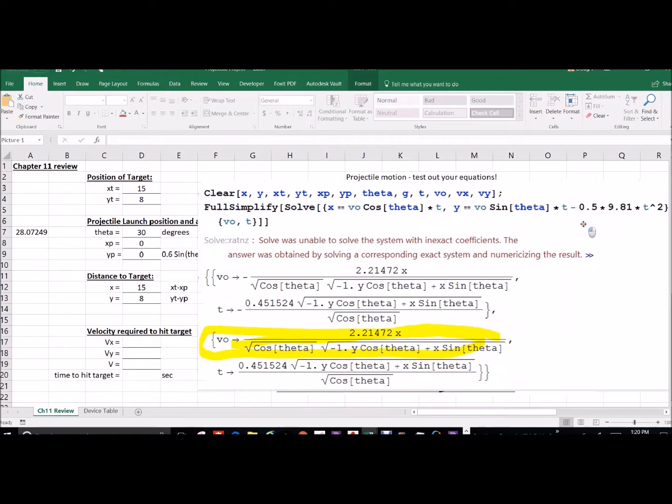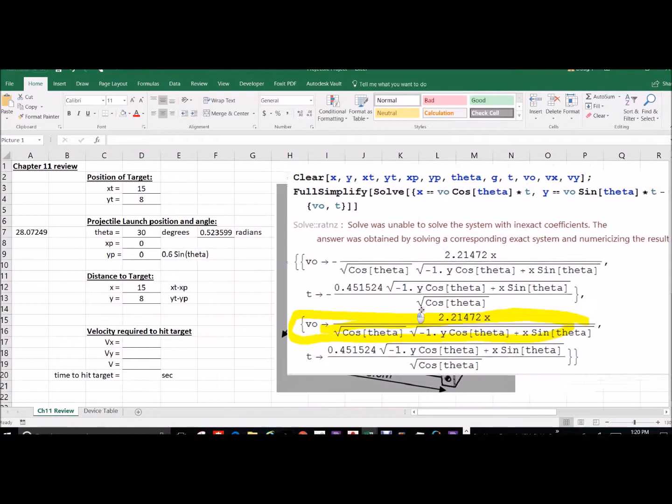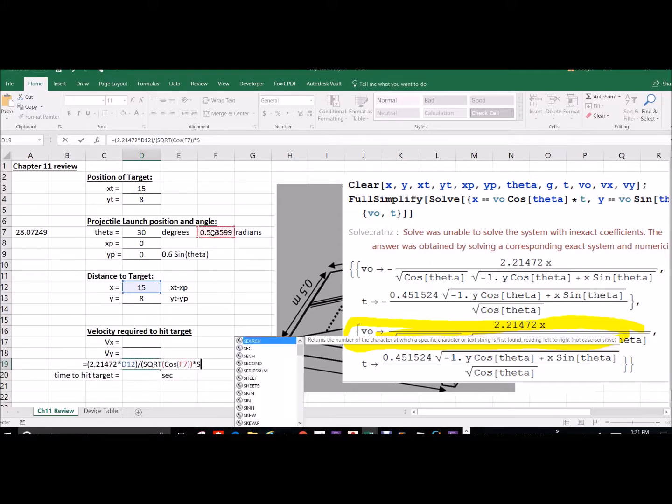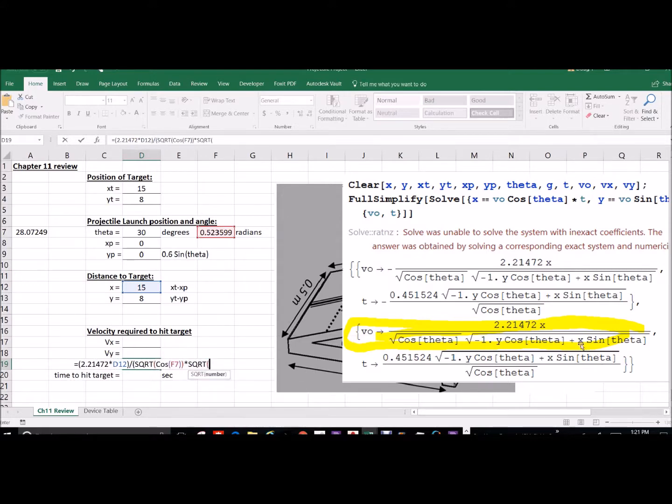I've used constant acceleration equations here, and this is going to give us an equation for our velocity as a function of the target position or the distance to the target. Make sure you get all of your parentheses in here right, and I solved for this just using Mathematica—again, those constant acceleration equations back from chapter 11.